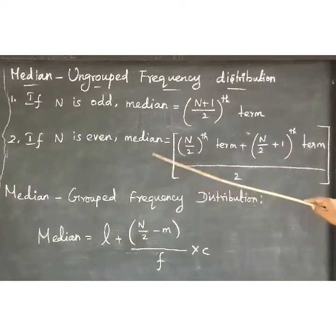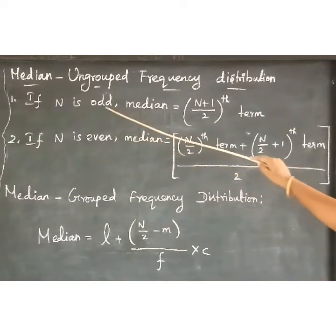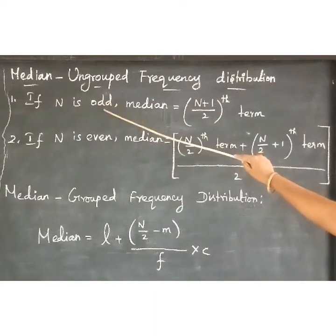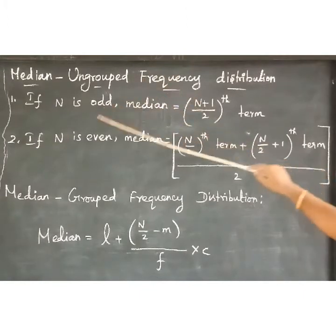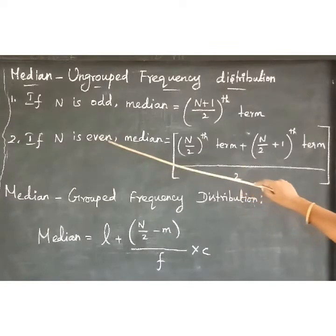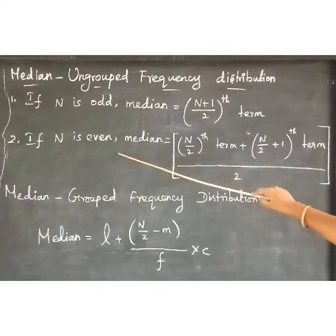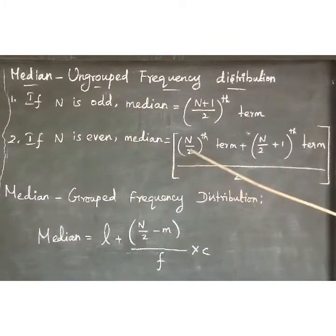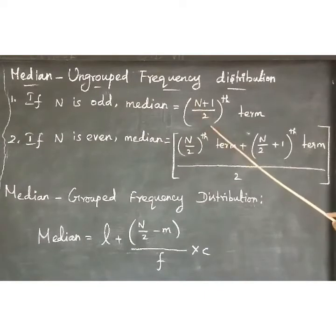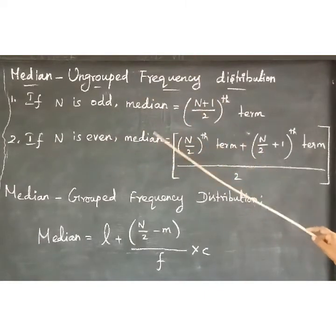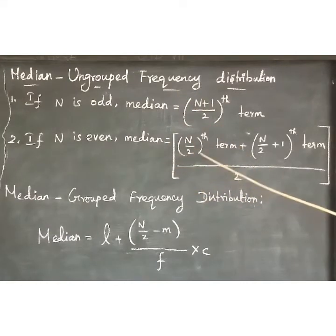If the number of observations is even, you have to find the arithmetic mean of two values. If the number of observations is odd, there is only one middle term. If the number of observations is even, there are two middle values, then you have to find the average of the two middle values.